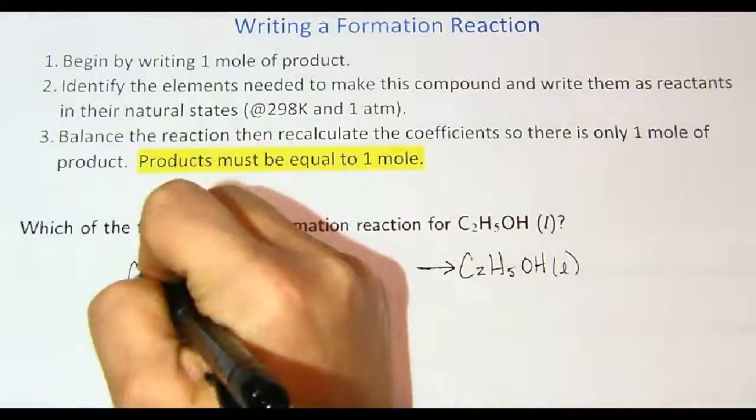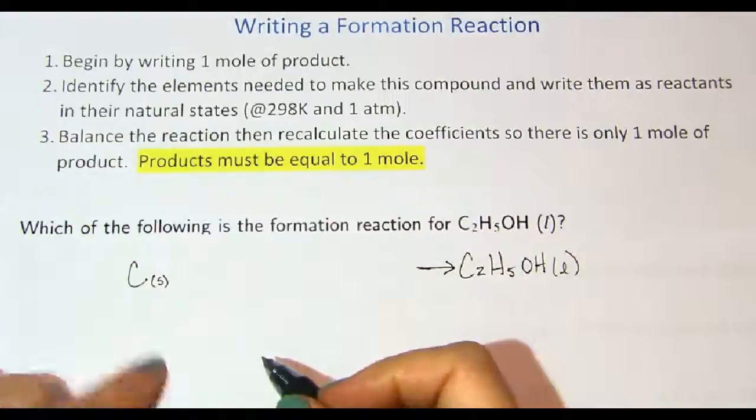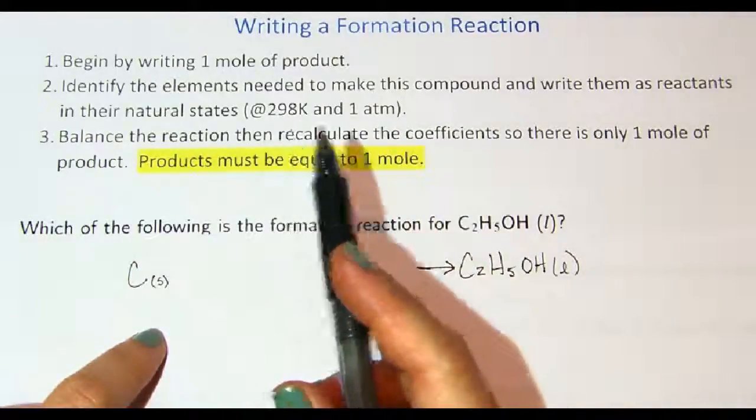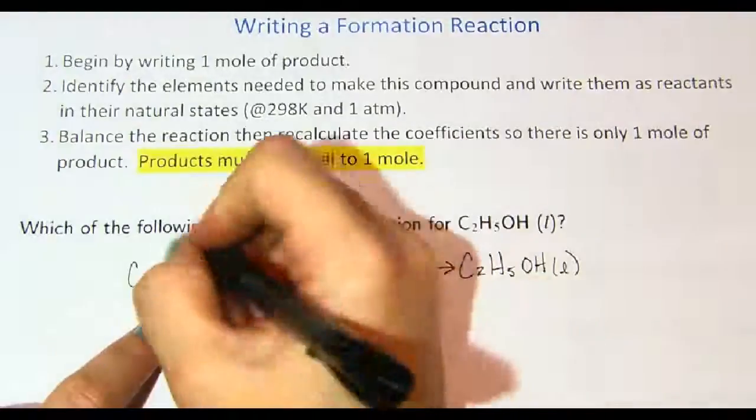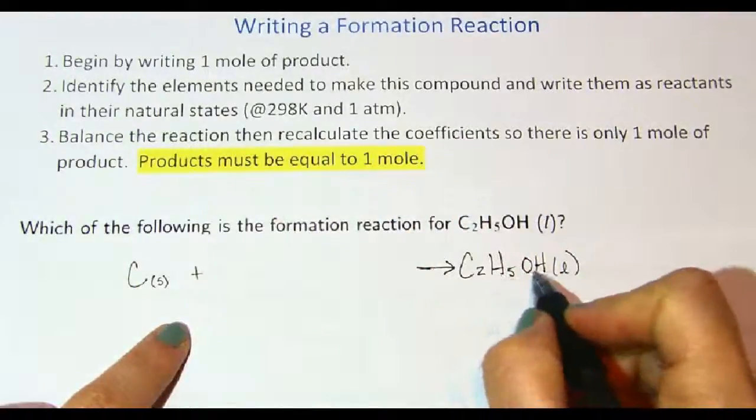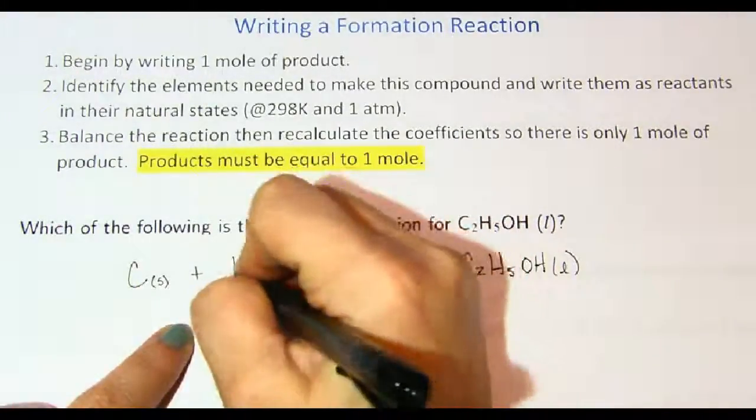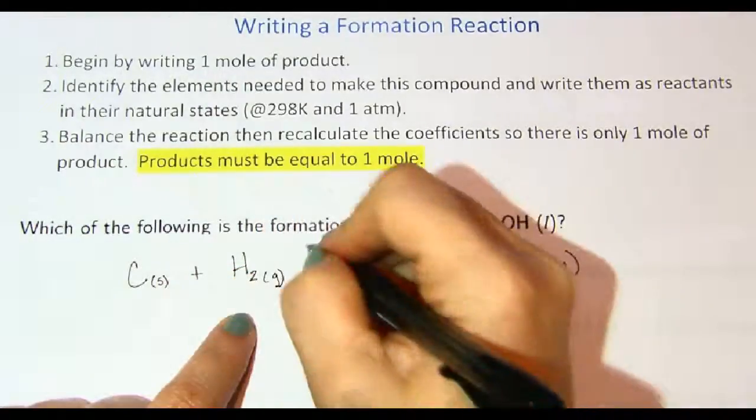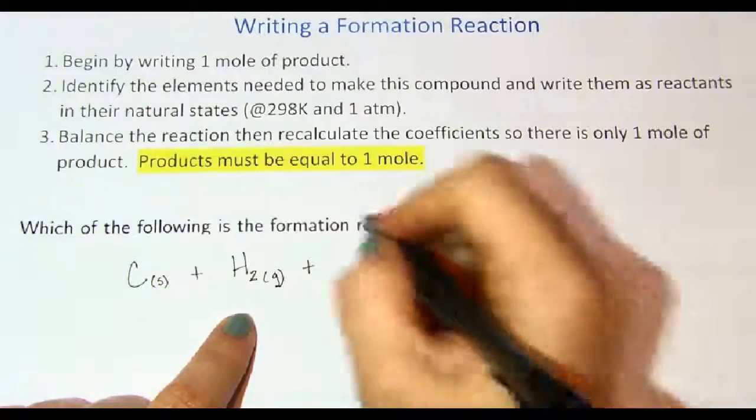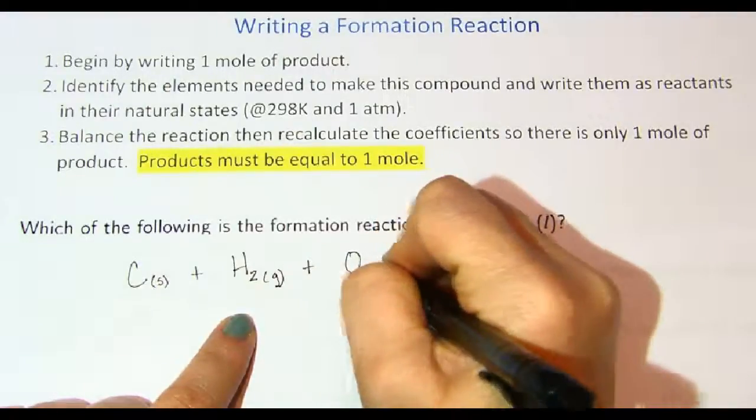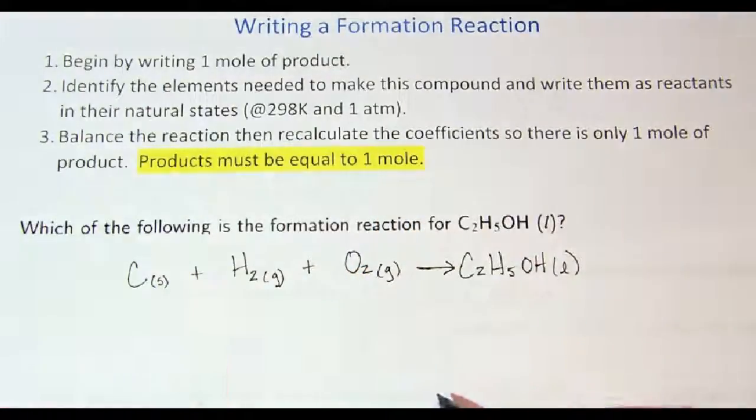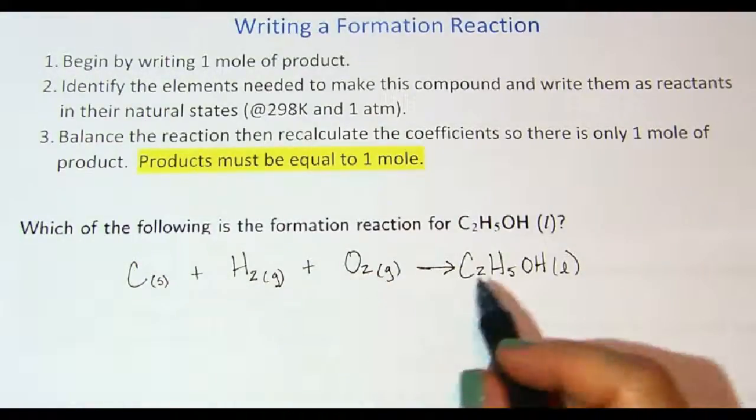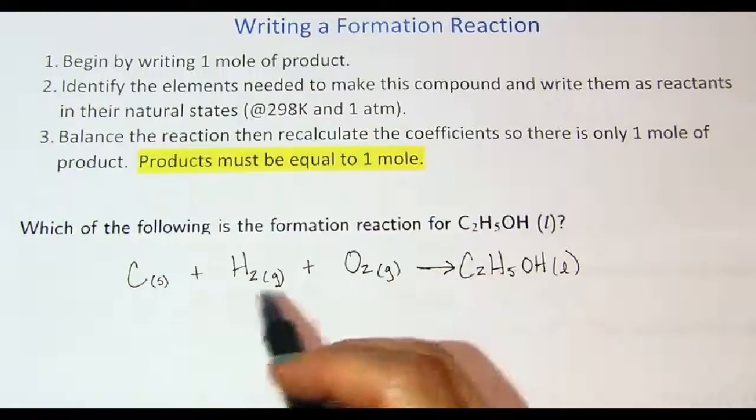Carbon is generally in the solid form at 298 Kelvin and one atmosphere, which is room temperature. Plus hydrogen, which naturally exists as a diatomic in the gas phase, plus oxygen, which also naturally exists as a diatomic in the gas phase. These are the elements that form this product, hence formation reaction.